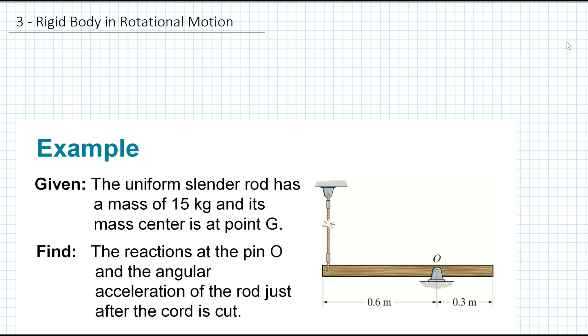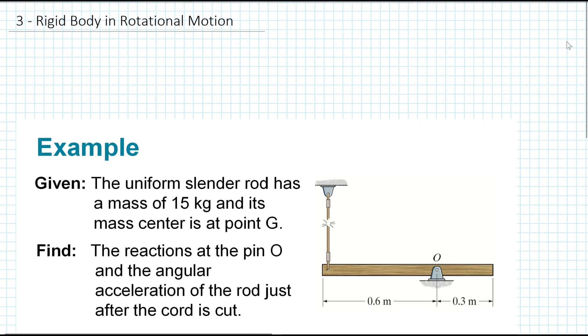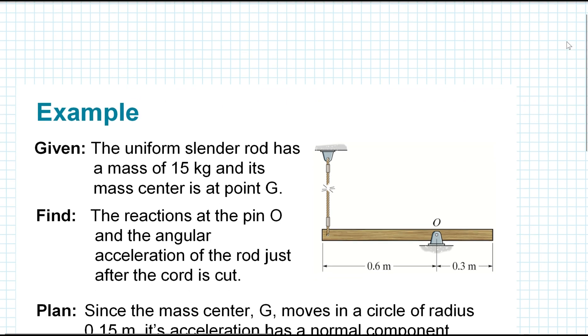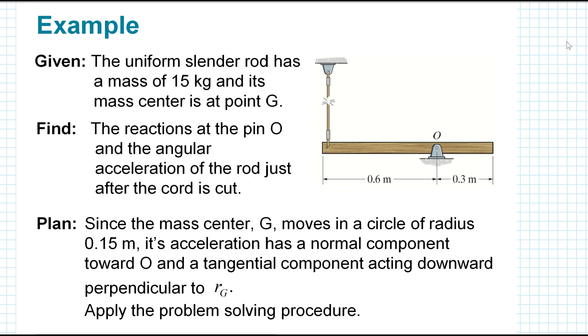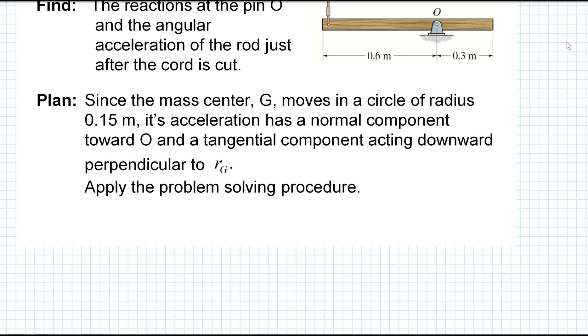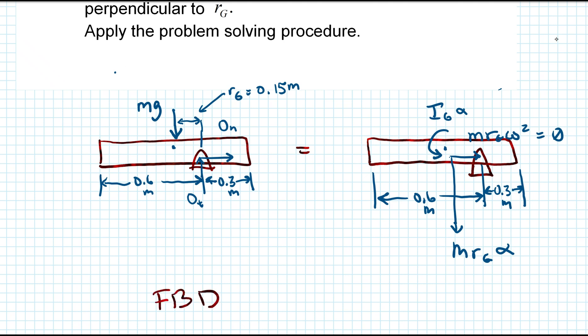Our third example looks at rigid body and rotational motion. The example says that given the uniform slender rod has a mass of 15 kilograms and its mass center is at point G, we're trying to find the reaction at pin O and the angular acceleration of the rod just after the cord is cut. In planning this out, since the mass center G moves in a circle of radius 0.15 meters, its acceleration has a normal component toward O and a tangential component acting downward perpendicular to R sub G. So we have the free body diagram and the kinetic diagram.